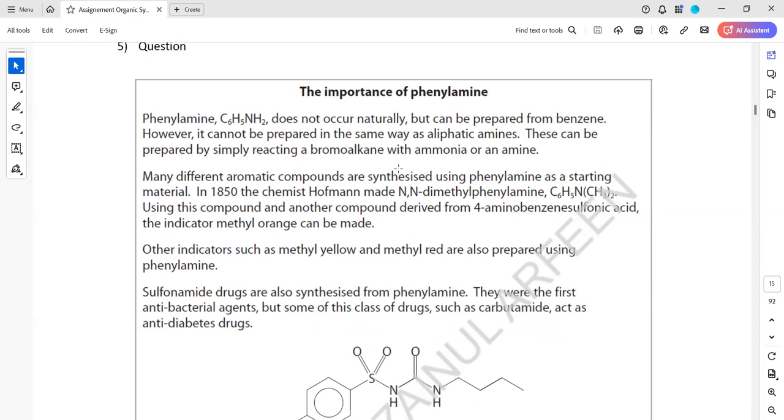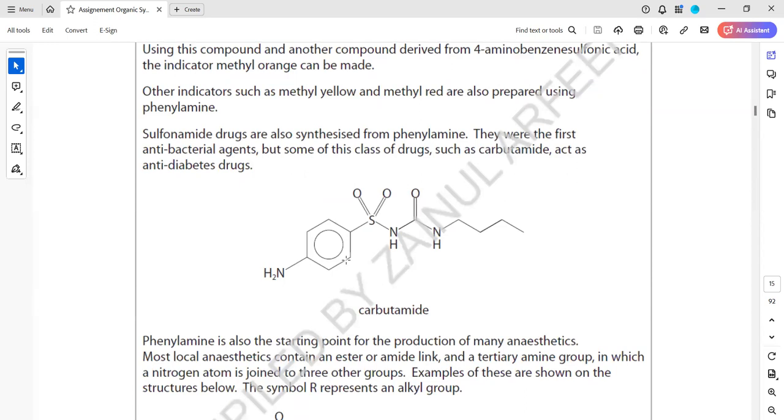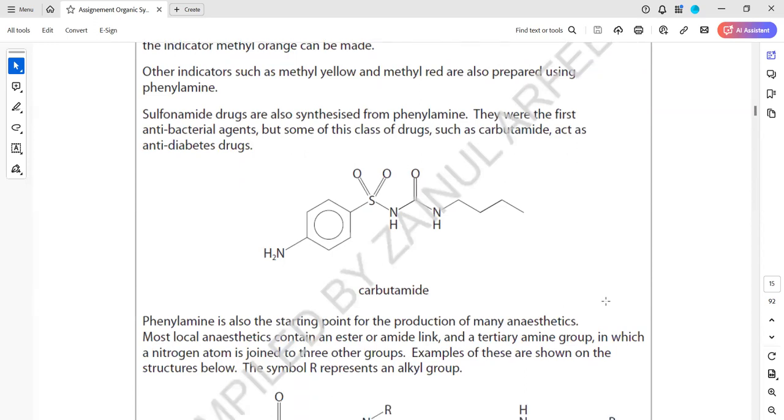Many different aromatic compounds are synthesized using phenylamide as a starting material. In 1850, the chemist Hofmann made N,N-dimethylphenylamide. Using this compound and another compound derived from 4-aminobenzene sulfonic acid, the indicator methyl orange can be made. Other indicators such as methyl yellow and methyl red are also prepared using phenylamide.